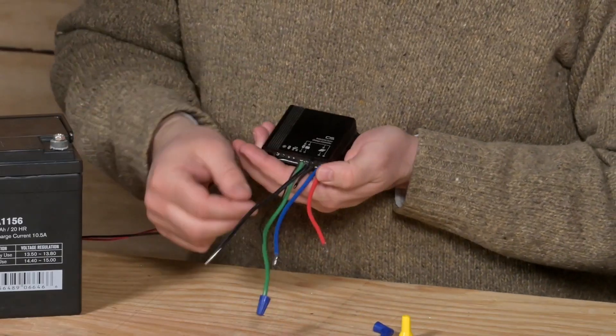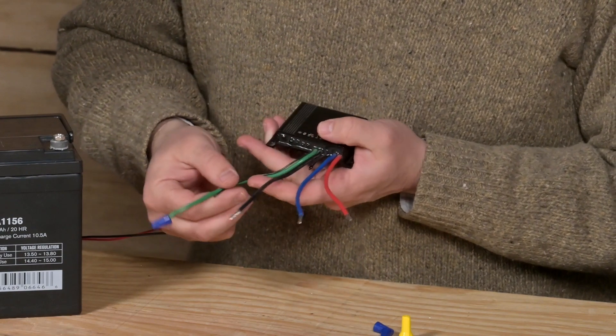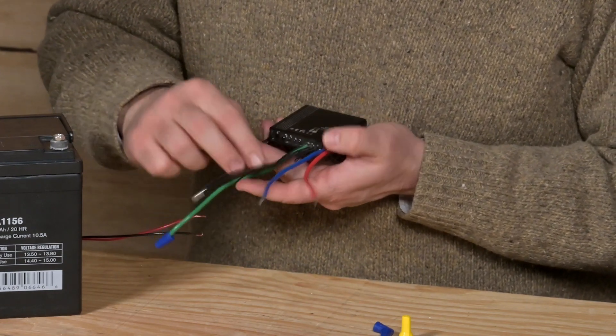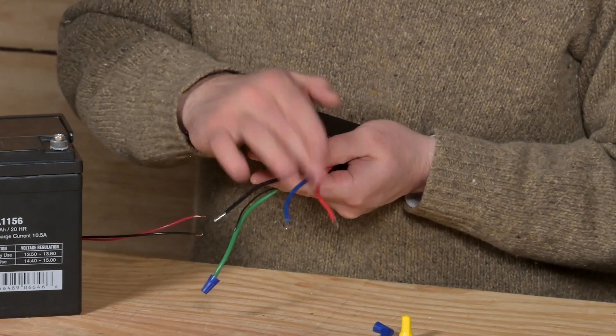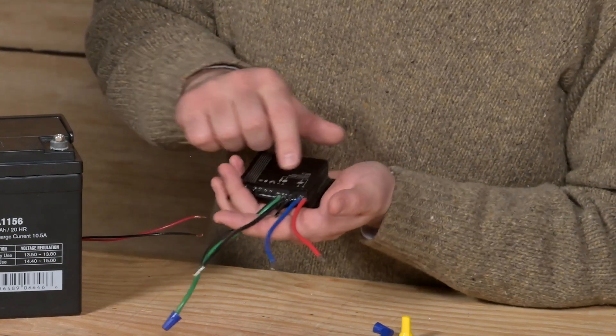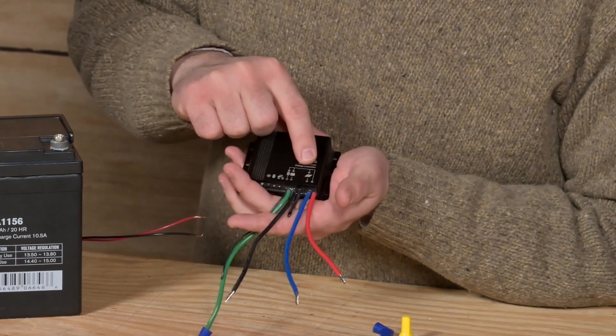On the voltage regulator we are going to ignore the green wire, this loose black wire and this little probe here. So we're going to focus on black, blue and red. Now colors may vary, so also look at the diagram on the voltage regulator.